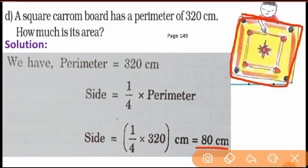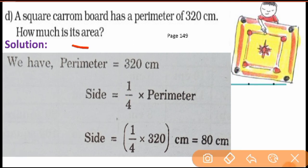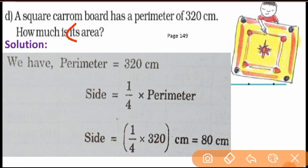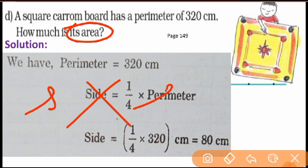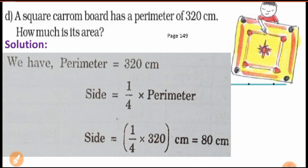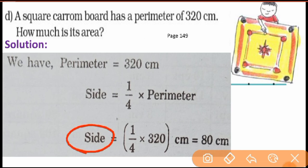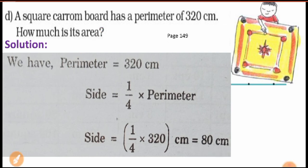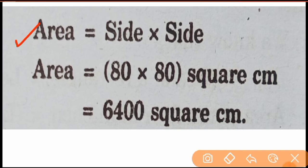We have found the side. Now why do we find the side? Because we need to find the area. The formula for the area of a square is: area = side × side. Since your carom board is a square, we use this formula to find the area.